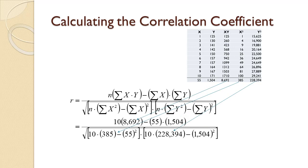The sum of the X squareds, 385, is used in one place. Finally, the sum of the Y squareds, 228,394, is also used in one place. Performing these calculations, we get a value of 0.9876, the same value I gave you in the forecasting tutorial.